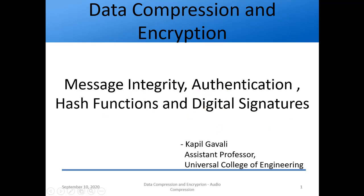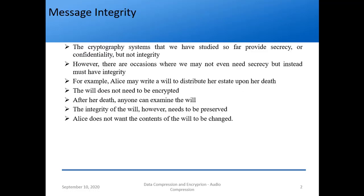Let's revise what we did so far in 5.4 and proceed to digital signatures. We talked about message integrity. The cryptographic systems we have studied so far provide confidentiality only, but not integrity — we are not sure whether the message has been changed in transit. There might be occasions where confidentiality is not important but integrity is very important. For example, if Alice wants to write a will it may not be confidential — anyone can see it — but whatever is written should not be tampered with.